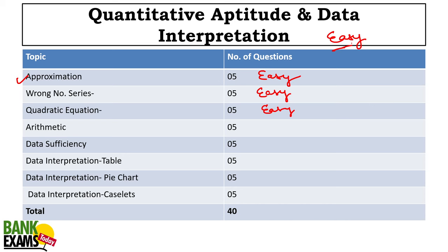If time management is not an issue and your speed is good, then you could easily score 22, 23, or 25 in quantitative aptitude. The sectional cutoff in this particular section should be around 10 to 12.